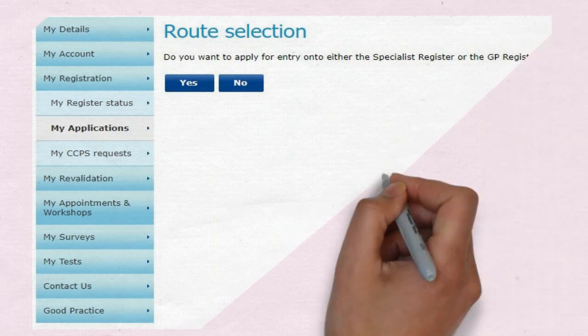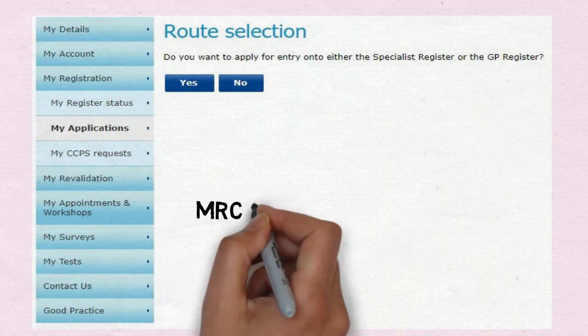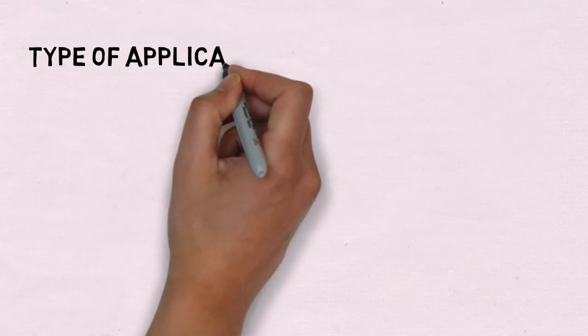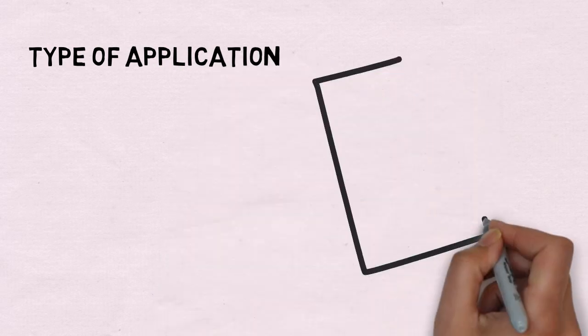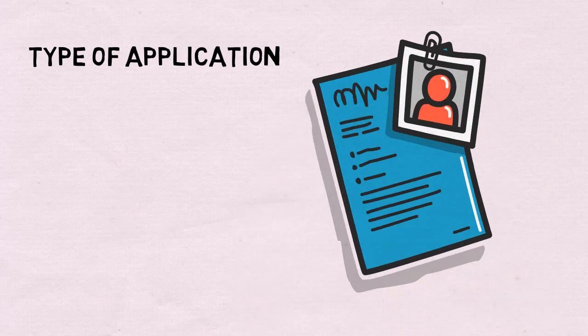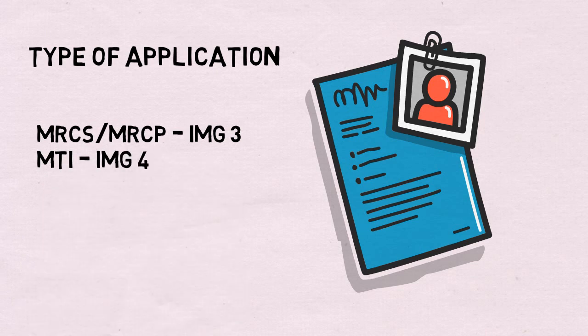As we are all international medical graduates, you have to click 'No' because we don't have EC rights. The next question will be whether you want to enter the specialty or the GP register. If you are an MRCS, MRCP, or a Royal College candidate, we do not enter the specialist or GP register, so click 'No.' For MRCS and MRCP it is IMG3, and for MTI candidates it is IMG4.